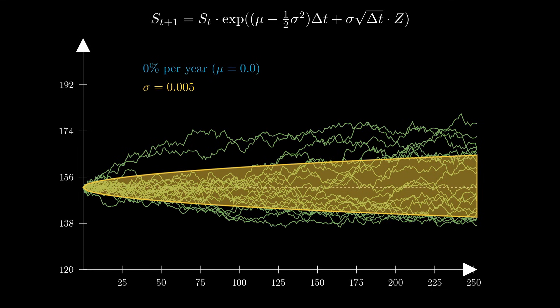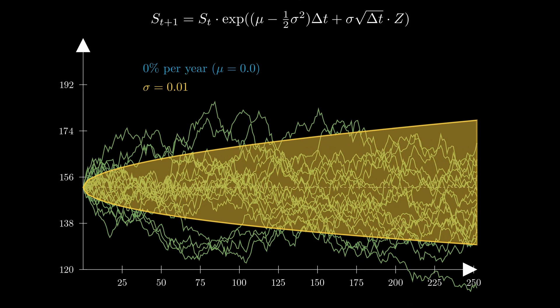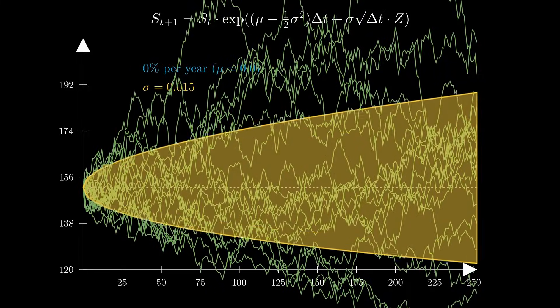The yellow band represents the standard deviation of all of the sample paths for each parameter setting. If we double the sigma value to 0.01, the price process becomes much more noisy, and is more likely to finish significantly higher or lower than the original price. Increasing the sigma value to 0.015 makes this even more apparent.